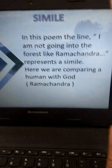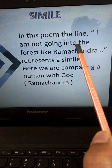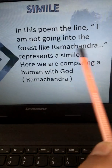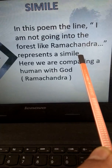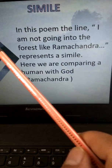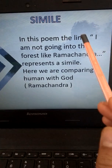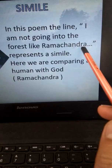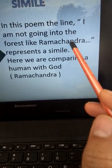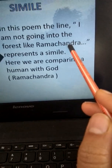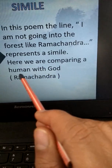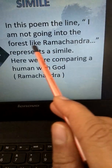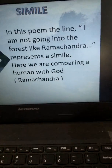In this poem, where can we find simile? The line 'I am not going into the forest like Ramachandra' represents a simile. Why? Because here 'I' refers to the little boy, who is a human being, and Ramachandra refers to Lord Ram, who is a god. So we are comparing a human with God — Ramachandra — using the word 'like.' That is why it is a simile.